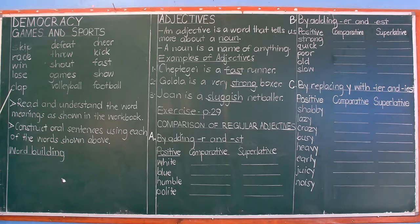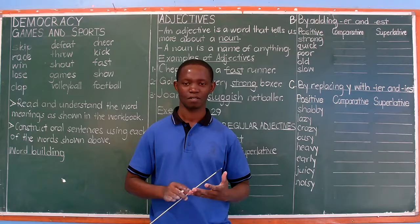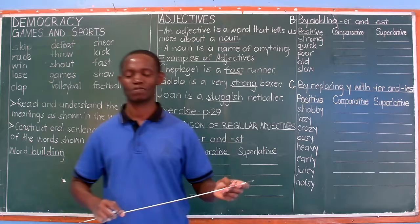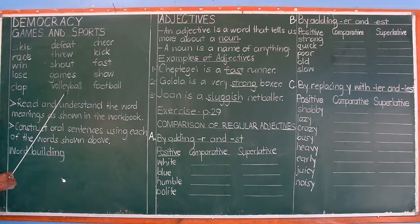Skip, race, win, lose, clap, defeat. One can read it as 'defeat' — that is a verb. Or 'defeat' — then it becomes a noun. The pronunciation changes it from one part of speech to another. If you say 'defeat' with a rising intonation, it becomes a noun. So you may read it as a verb, 'defeat', or noun, 'defeat'. Then throw, shout, games, volleyball.